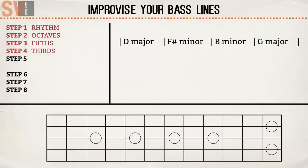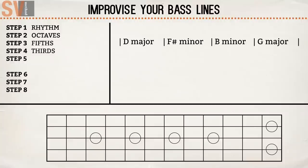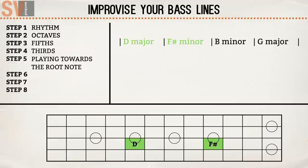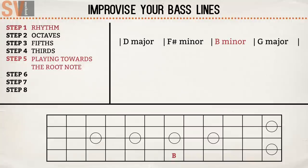And now use all the previous steps as well. Another thing you can use is to play towards the next root note. So when you play the first bar — D major — you already start thinking about the second bar, F sharp minor. You can play towards this note from above or below. Depending on the rhythm, you decide how many notes you want to play towards the next root note. Let's combine it all.